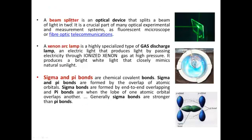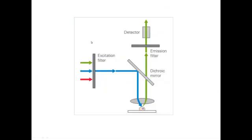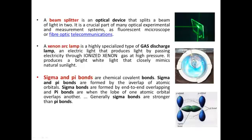A beam splitter or dichroic mirror is an optical device that splits the beam of light into two. It is a crucial part of many optical instruments like the fluorescent microscope or fiber optic telecommunications. The xenon arc lamp is a highly specialized type of gas discharge lamp that produces light by passing electricity through ionized xenon gas at high pressures.